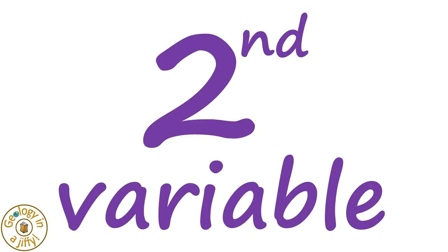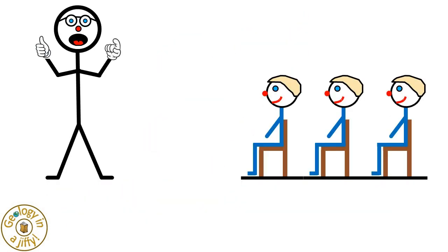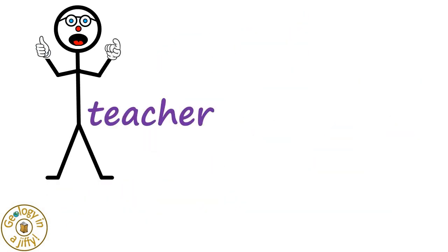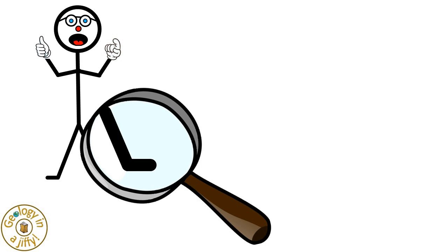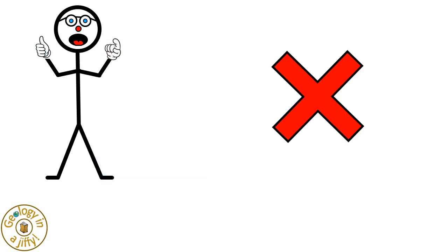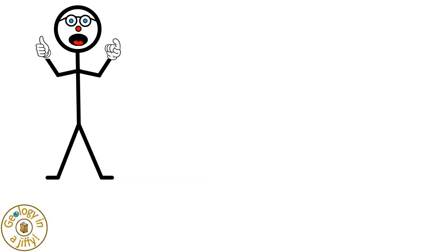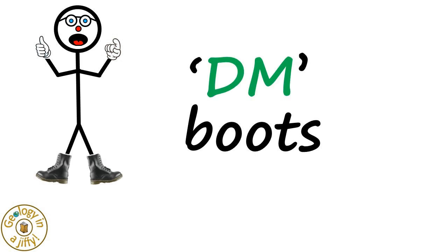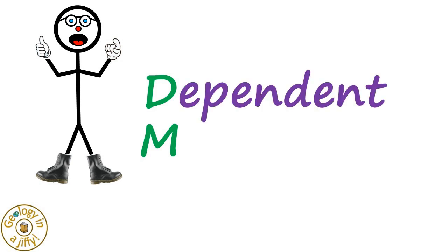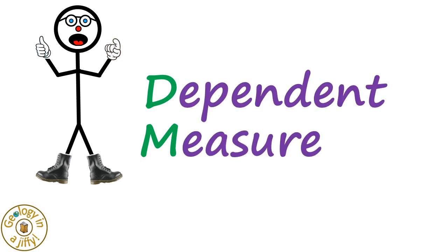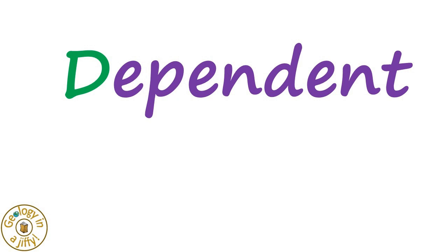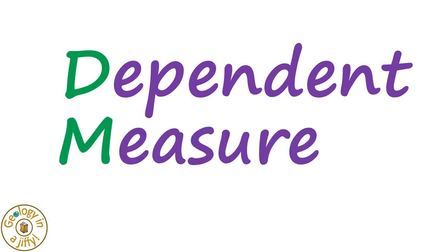The second variable, as shown in our classroom model, looks at the teacher's feet, but they have no footwear on. Our teacher likes boots, especially DM boots. DM boots, with D for dependent and M for measure, reminding us that the dependent variables are those that we measure.